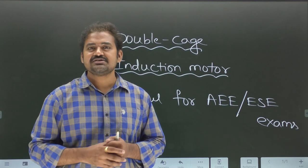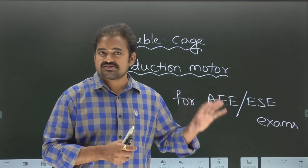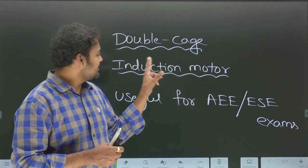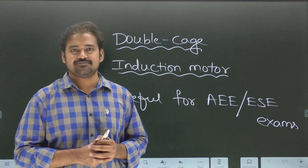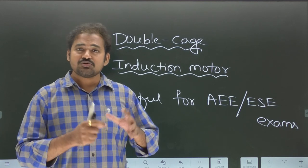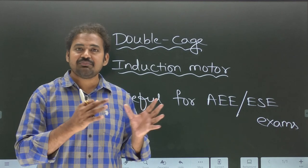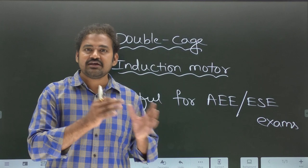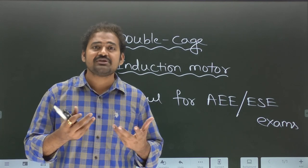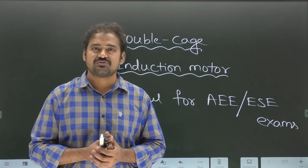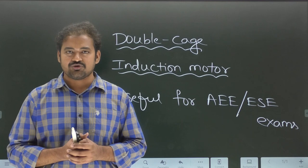Whereas in slip ring induction motor, we can add additional resistance in series with the rotor so that higher starting torque is possible. This is the reason why for all high starting torque applications, slip ring induction motor is preferred. Therefore, the disadvantage with normal squirrel cage induction motor is it cannot be used for high starting torque applications. To overcome that disadvantage, we have a special design known as the double cage induction motor design.